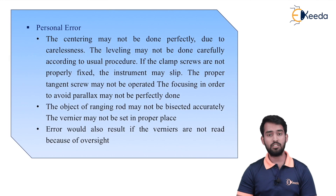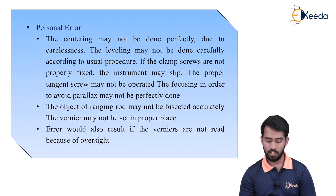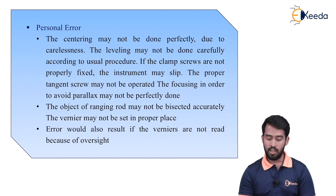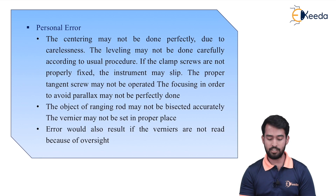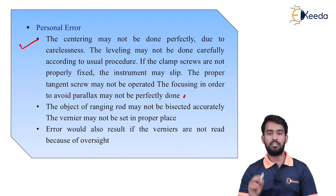Now we talk about personal errors — errors made by the human observer. First, centering may not be done perfectly due to carelessness. The leveling may not be done carefully according to the usual procedure. If the clamp screws are not properly fixed, the instrument may slip. The proper tangent screws may not be operated, and focusing to avoid parallax may not be perfectly done. Overall, this means the temporary adjustments are not being done properly.